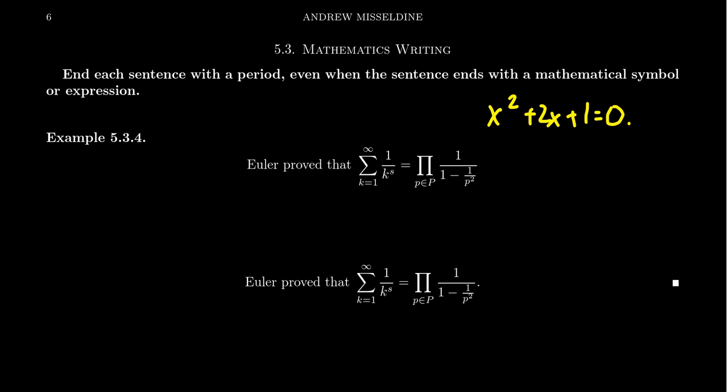Take for example the following sentence. Euler proved that the sum ranging from k equals 1 to infinity of 1 over k to the s is equal to the product over the set of primes of 1 over 1 minus 1 over p squared. That seems like a perfectly good sentence.